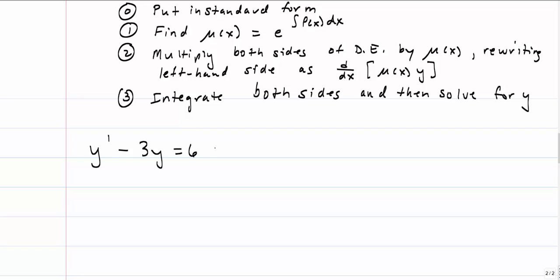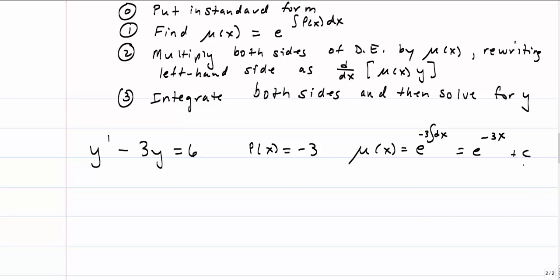Let's look at an example: y' - 3y = 6. This is already in standard form — it's linear and first-order. P(x) equals negative 3. So mu(x) = e^(∫-3 dx) = e^(-3x). We're not going to include a constant of integration here, because mu(x) works for any value of that constant, so we just let c = 0. Now multiplying both sides of the equation by mu(x) = e^(-3x): I first write it in terms of mu(x) so I don't forget to rewrite the left-hand side as the single derivative and also multiply the right-hand side by mu(x).